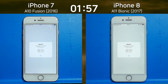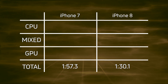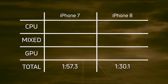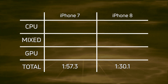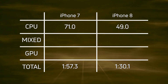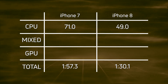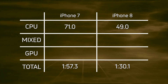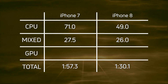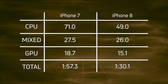Okay, let's break down those times. Clearly the newer iPhone 8 won there: one minute 30.1 compared to one minute 57.3 for the iPhone 7 — a big win there by the iPhone 8. Looking at the CPU times: 71 seconds, over a minute, for the iPhone 7, but 49 seconds, well under a minute, for the iPhone 8. So clearly a big difference in the CPU. When we get to the mixed CPU/GPU, not so much of a big difference: 27.5 versus 26 seconds.